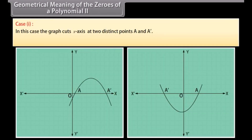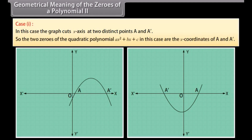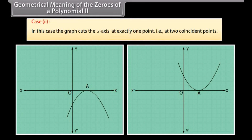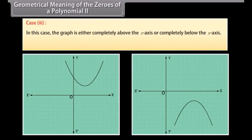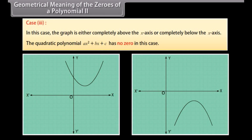Case 1: The graph cuts the x-axis at two distinct points A and A-bar. The two zeros of the quadratic polynomial ax squared plus bx plus c are the x-coordinates of A and A-bar. Case 2: The graph cuts the x-axis at exactly one point, that is, at two coincident points. The two points A and A-bar coincide to become one point A. Case 3: The graph is either completely above or completely below the x-axis; it does not cut the x-axis at any point. The quadratic polynomial has no zero in this case.